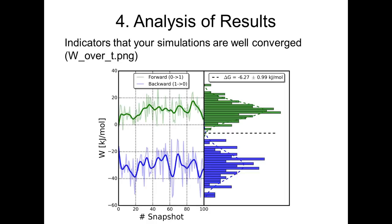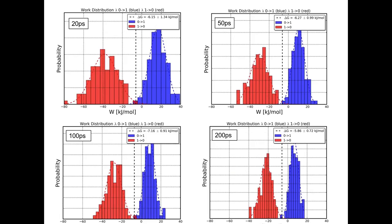Here I show the effect of using different transition times on the results. Using the same simulations but changing the transition time from 20 picoseconds to 50 to 100 to 200 picoseconds: as the transition time increases, the intersection of the Gaussians stays near the same, but the width of the Gaussians decreases and the estimated values move closer to the true delta G. For similar hydrophobic residues short transitions work decently well, but for very dissimilar residues you often need 100 to 200 picoseconds or more.